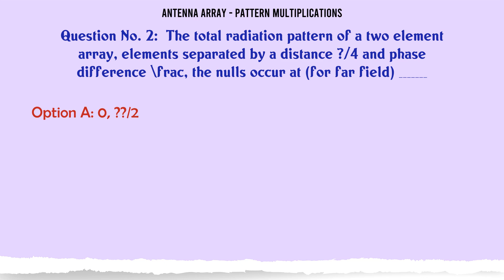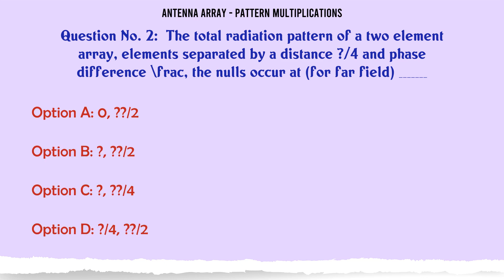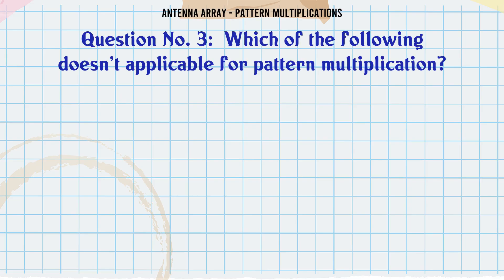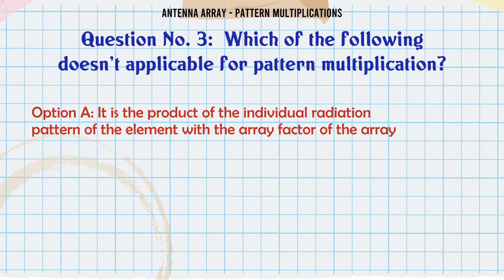The total radiation pattern of a two-element array with elements separated by a distance and phase difference Fraxen 2 — the nulls occur at far field: A. 0°, B. 2°, C. 4°, D. 4°. The correct answer is 0°.